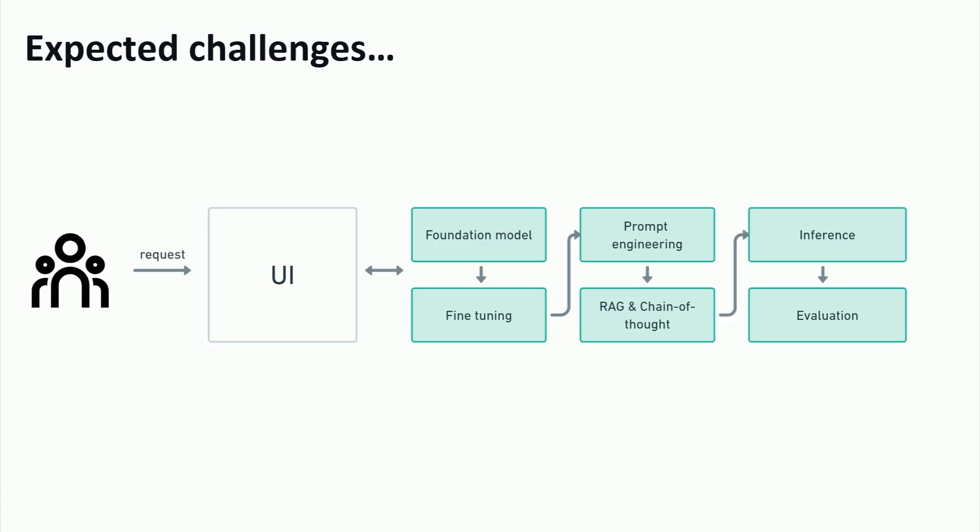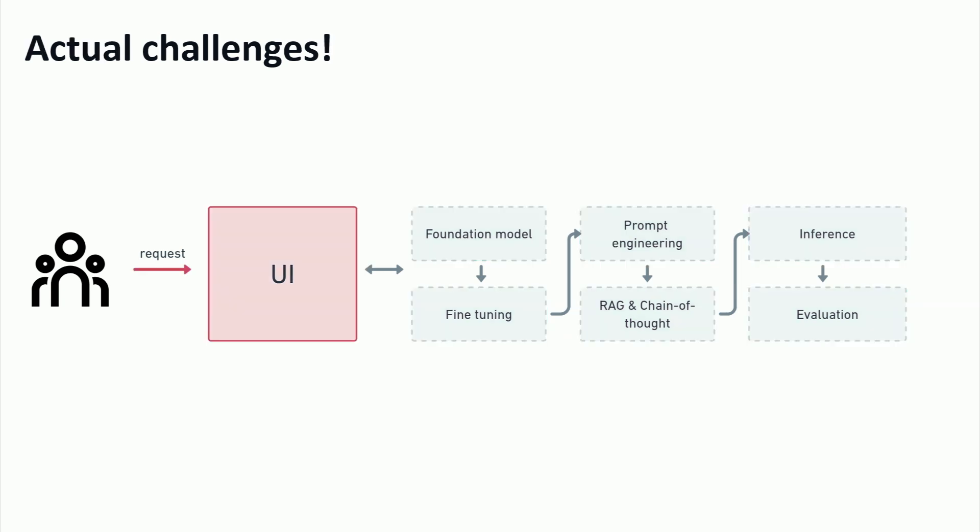What we expected to happen was we were going to spend the next month really in the details optimizing what our model was doing — choose a different foundation model, fine-tune it and pre-train it, make the prompt better, add a RAG, add a chain of thought, make the inference faster. A lot of really interesting technical problems. But we were feeding all of these questions to our logging system, auditing them, trying to rank how good they were doing. And it turned out that most of the time, the problem with the feature was not with the model — it was upstream. It was how we designed the UI and what users actually wanted to do with a feature like this.